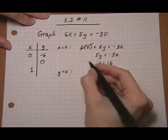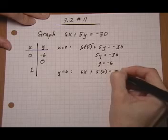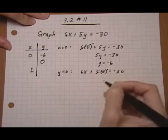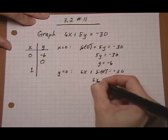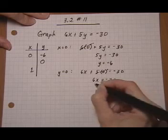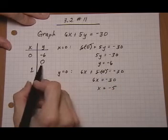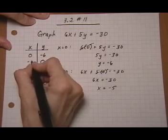Let's put in y equals zero. 6x plus 5 times 0 equals minus 30. That guy is gone. So we really have 6x equals negative 30. Divide both sides by six. We get x equals minus 5. So when y is zero, x is minus 5.